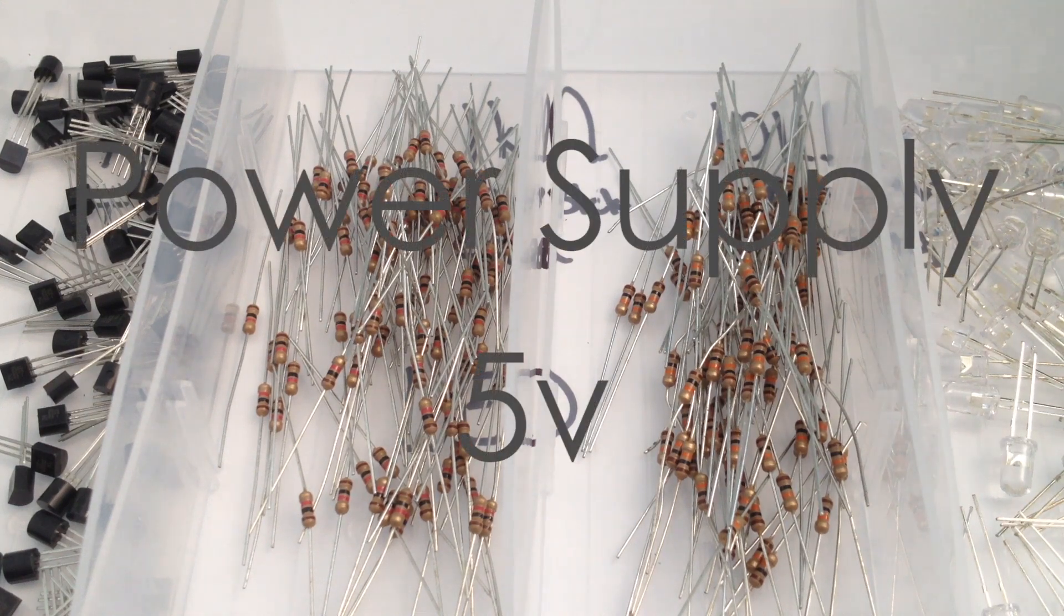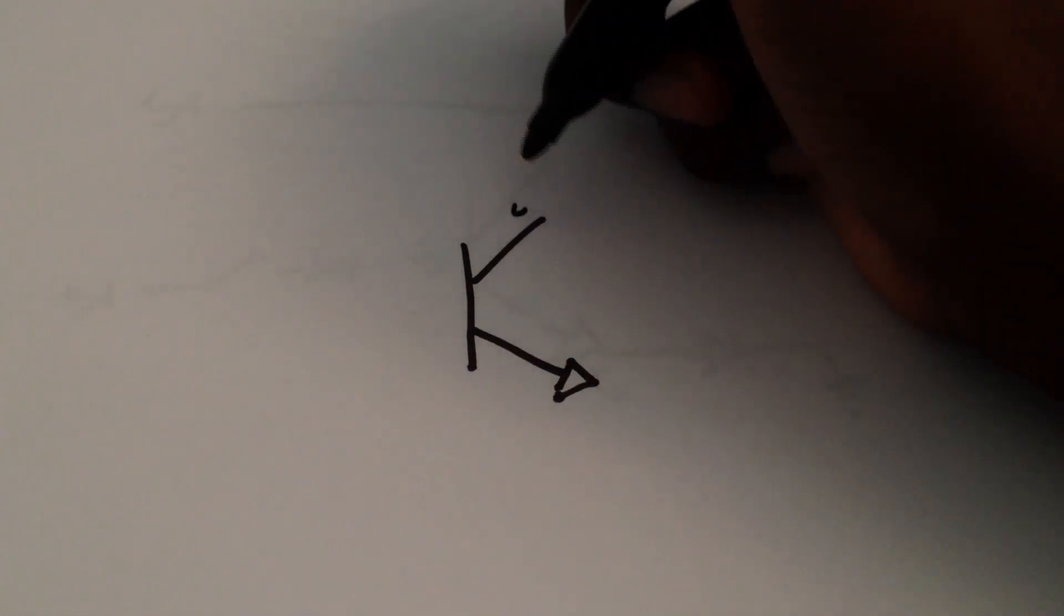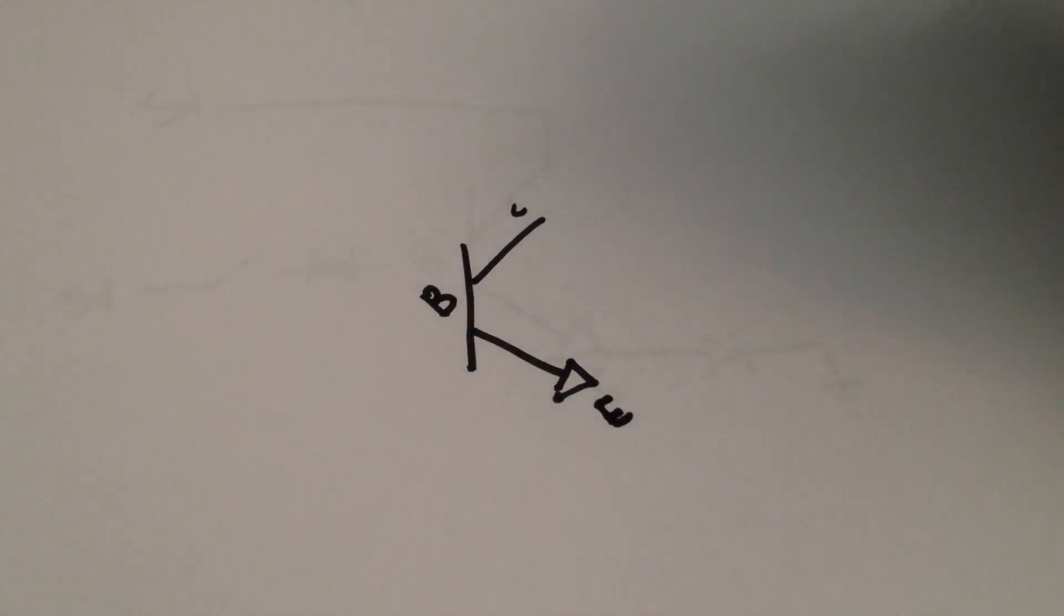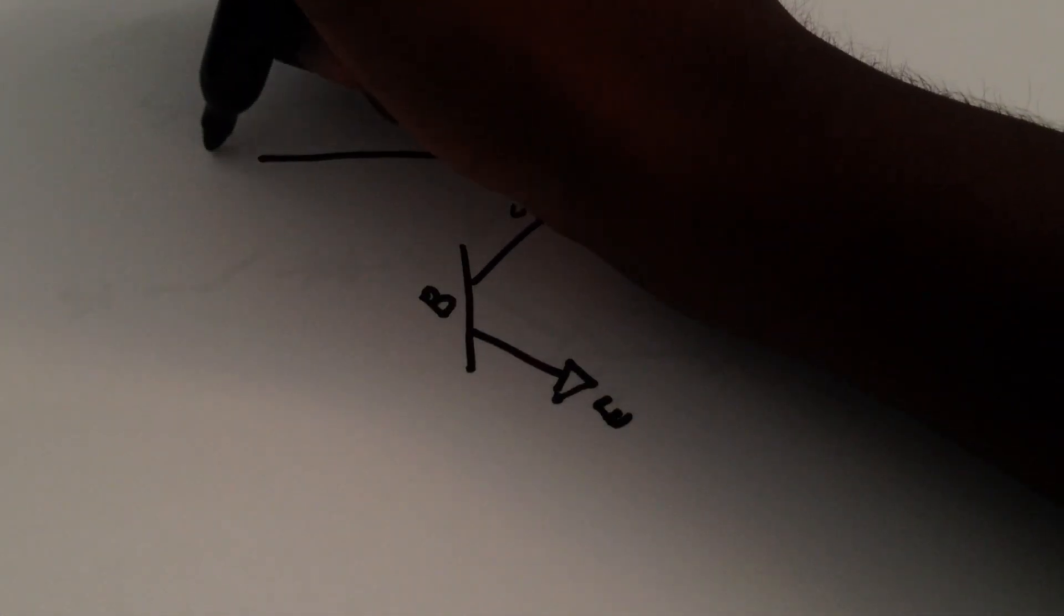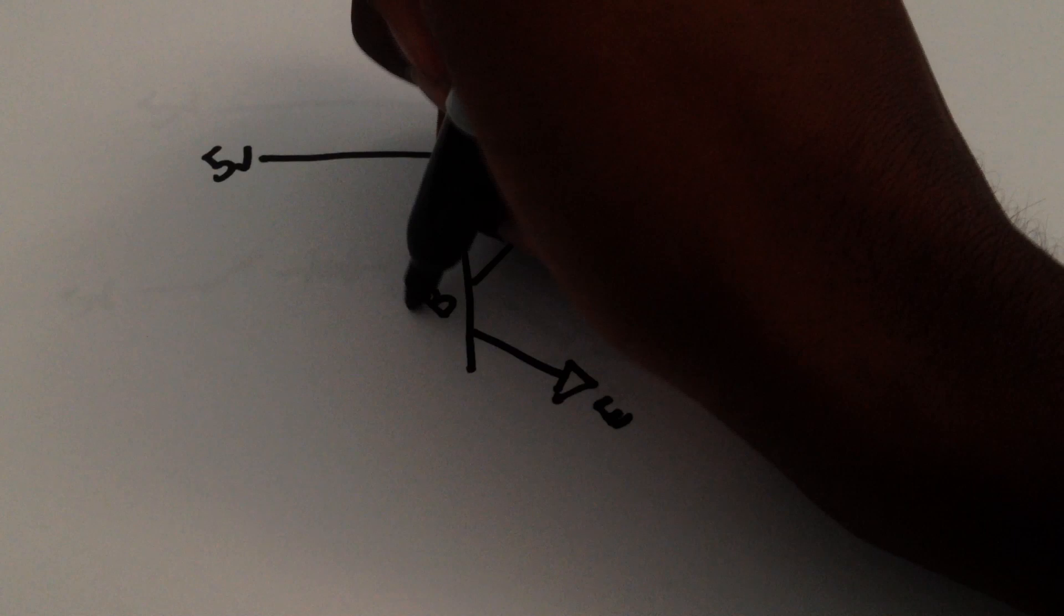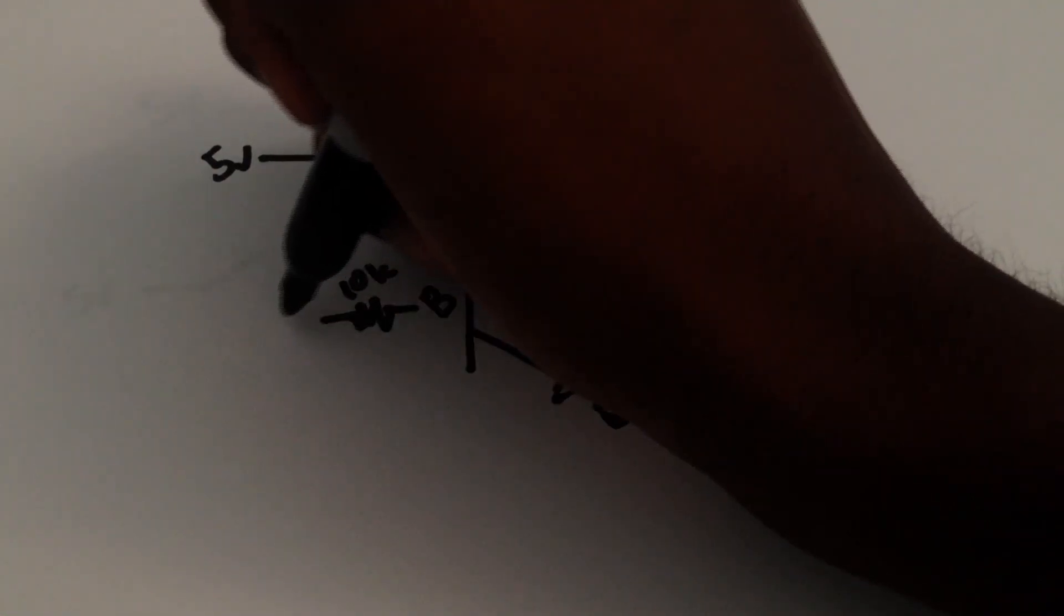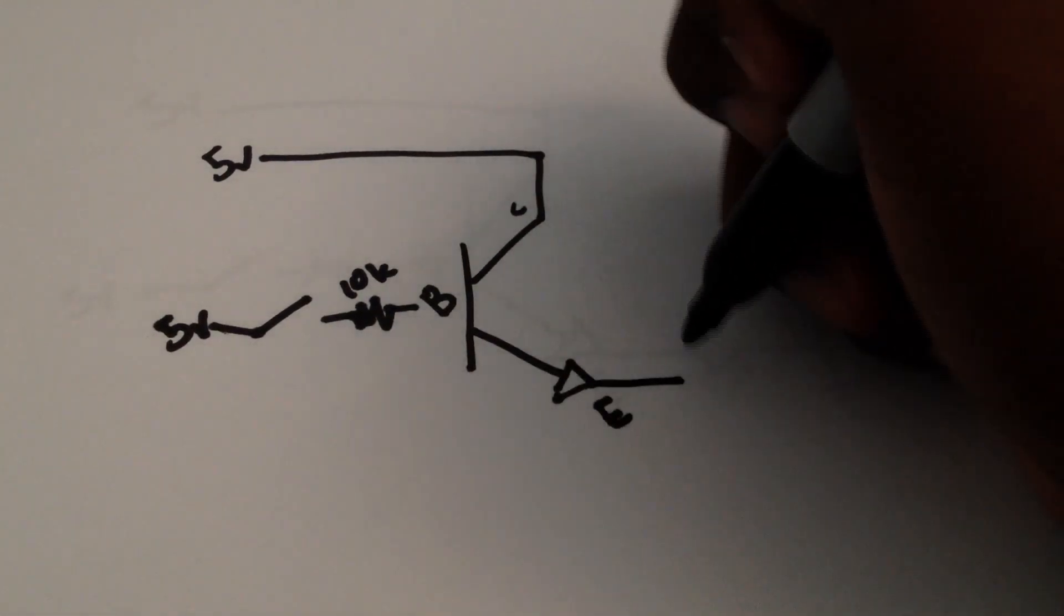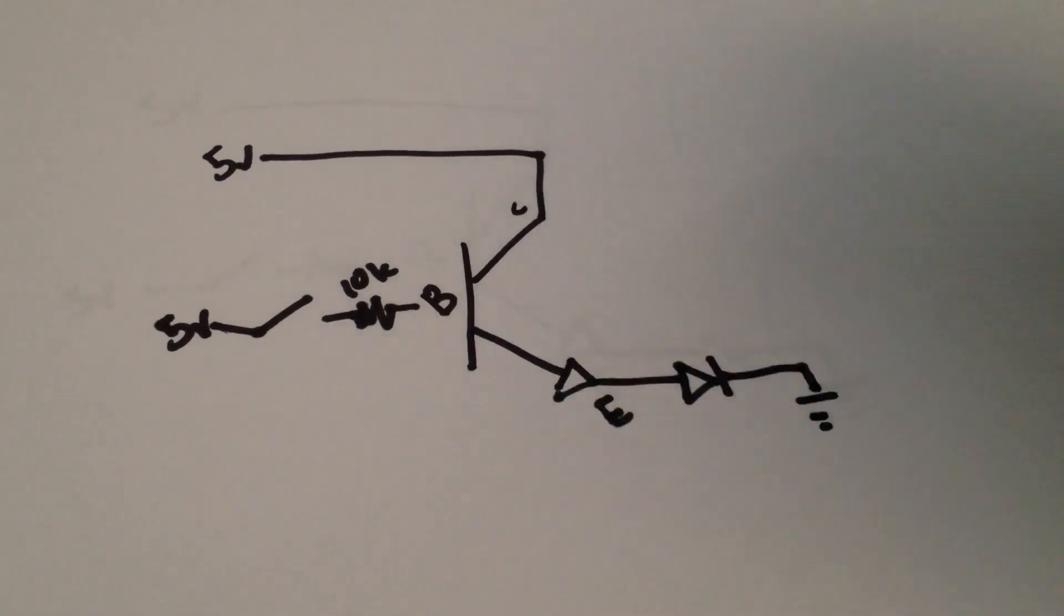Power supply, remember, should be 5 volt. This is how you draw a transistor, where this is the collector, this is the base, and this is the emitter. The way you use it is the collector goes to your power supply, which is in our case, 5 volts. And the base goes through a 10K resistor, to a switch, and then to the power supply.